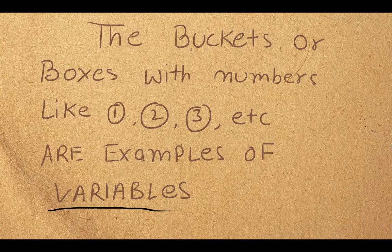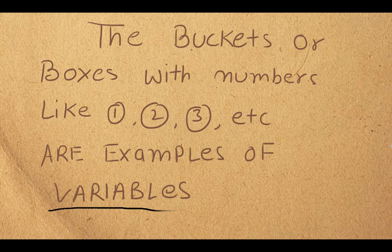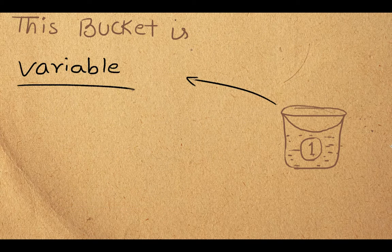In the real computer memory or phone memory, these variables are like sections in the memory where we store the data. We give a name to that data — there is a place in the memory where we have stored the data and given it a name. We refer to that place with the name of that variable, like bucket number one or bucket number two.